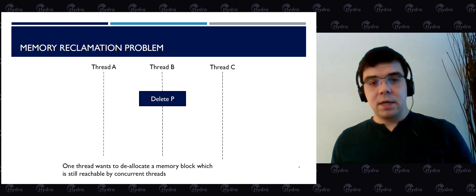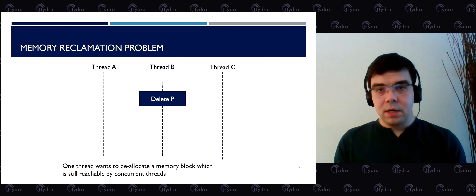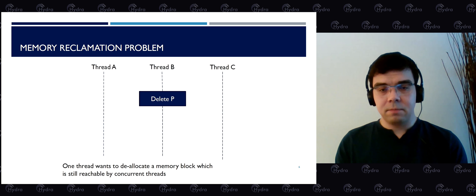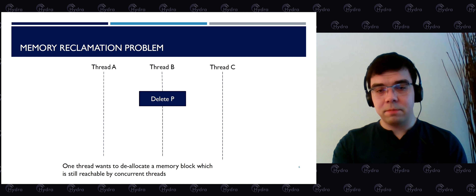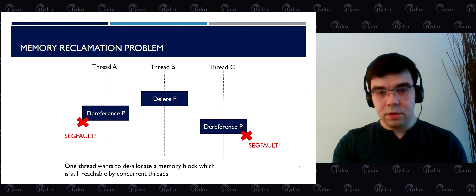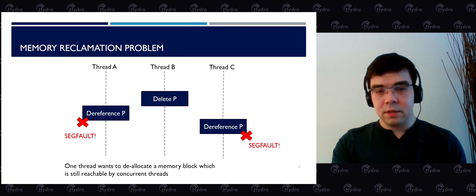What is the memory reclamation problem? It is defined as follows: one thread wants to deallocate a memory block that is still reachable by concurrent threads. For example, thread B tries to deallocate a block referenced by pointer p, while thread A and thread C try to dereference pointer p — which is still reachable by concurrent threads. Naturally, the program crashes with a segfault.